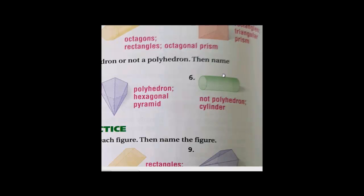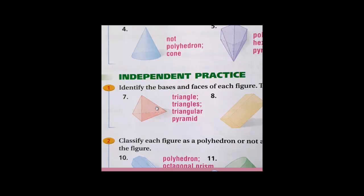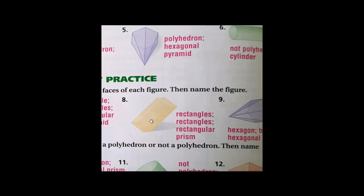We name it a cylinder. Question seven — we will name all the bases and faces in the figure and then name it. The base is a triangle, and I have only one base, so it's a pyramid. We name a pyramid by its base — the base is a triangle and all other faces are triangles, so we call it a triangular pyramid.